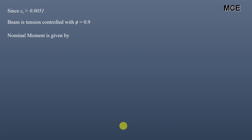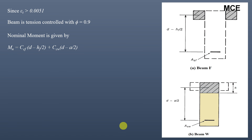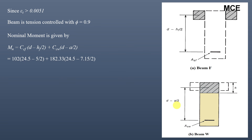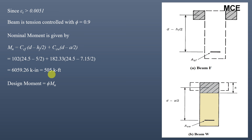The nominal moment for this beam is the sum of each compression force multiplied by its distance to the tension steel centroid. For Beam F, the moment arm is (d − hf/2), and for Beam W it is (d − A/2). Substituting values gives Mn = 6059.26 kip·in = 505 kip·ft. The design moment is φMn = 0.9 × 505 = 455 kip·ft.